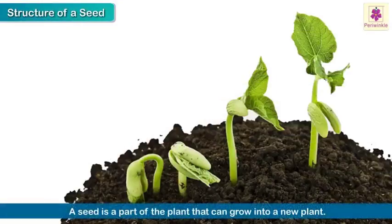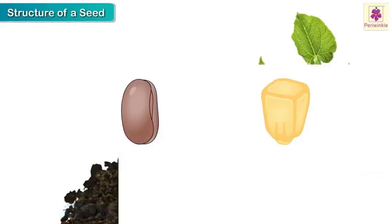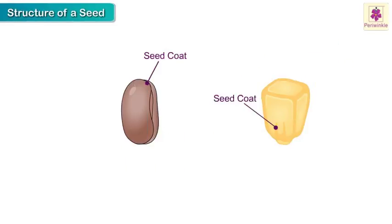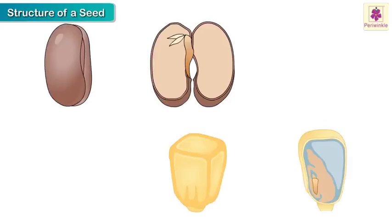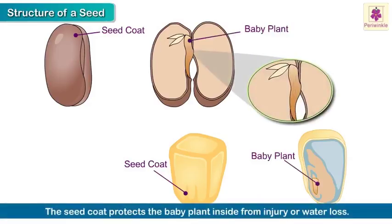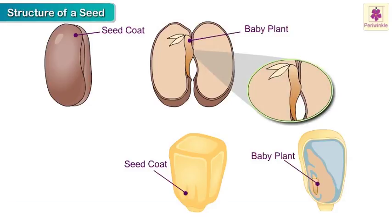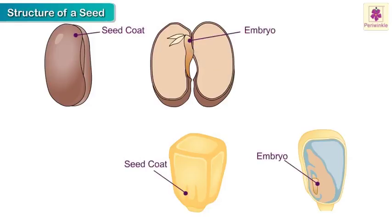A seed is a part of the plant that can grow into a new plant. Let us look at the structure of a seed. It has an outer covering called the seed coat. The seed coat protects the baby plant inside from injury or water loss. The baby plant is also called an embryo.